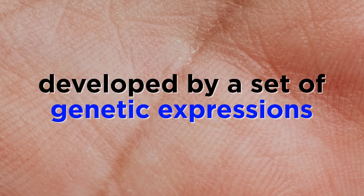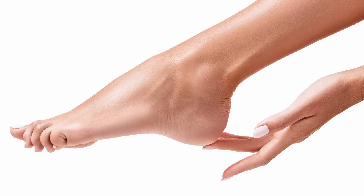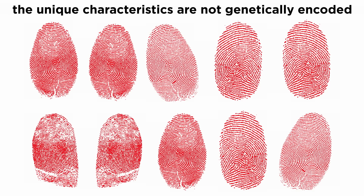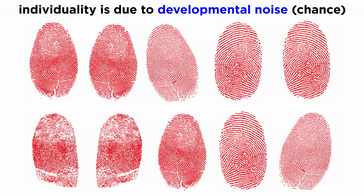This is because our hands and feet, enclosed by friction-ridge skin, are developed by a set of genetic expressions. The shape, form, and functions of our hands and feet are consistent throughout the total human population. Therefore, there are only limited ways in which the volar pads can develop, thus giving rise to a limited number of patterns. Nonetheless, the unique characteristics of these patterns are not hardwired into any genetic code. The individuality of the ridges and creases is attributed to random or chance events, often called developmental noise, or noise in gene expression.